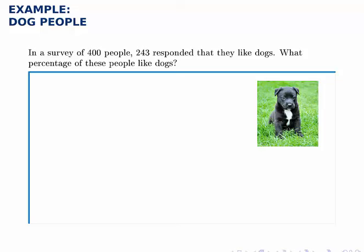So this is an example of an applied percentage problem, and clearly this is a made-up problem, because there's no way that only 243 people out of 400 like dogs. Obviously it's made up, but it illustrates how we find the percentage that relates to numbers.